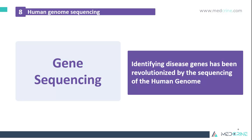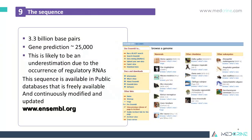Human genome sequencing has revolutionized the identification of diseases and their disease genes. The human genome has almost 3.3 billion base pairs, with a gene prediction of about 25,000 — and this may be an underestimate because regulatory ribonucleic acids are also involved. This sequence is available in public databases, freely accessible, and is continuously being modified and updated. You can access it at www.ensembl.org where you can run a search.